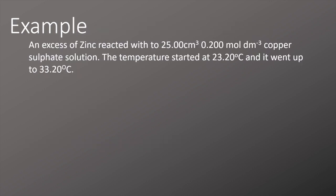Let's take a look at this simple example. An excess of zinc is reacted with 25 centimeters cubed of 0.2 molar copper sulfate solution. The temperature started at 23.2 degrees celsius and went up to 33.2 degrees celsius.